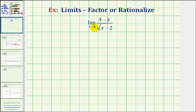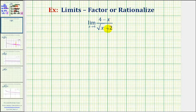In order for this limit to exist, that function value must be the same as we approach four from the left and from the right. Notice if we try to find this limit by performing direct substitution, we would have zero divided by zero, which is an indeterminate form of a limit.